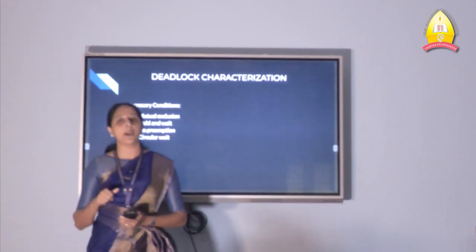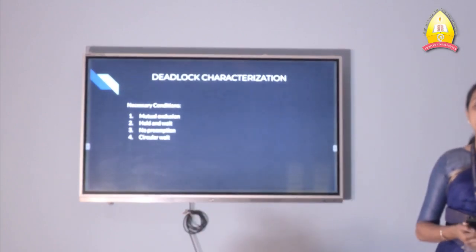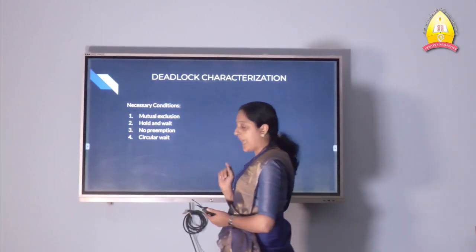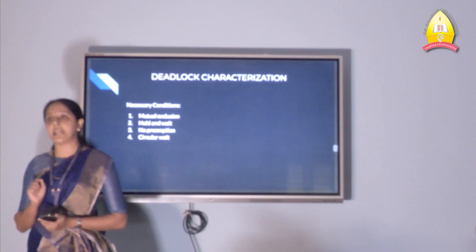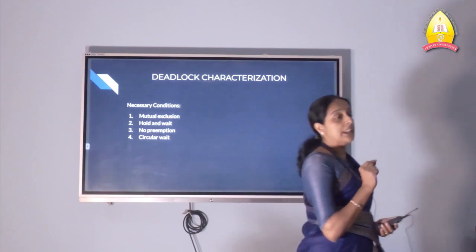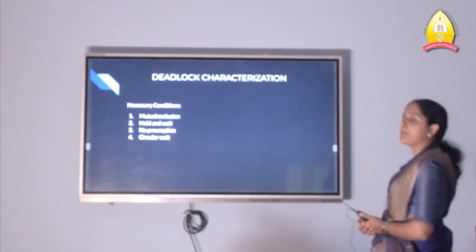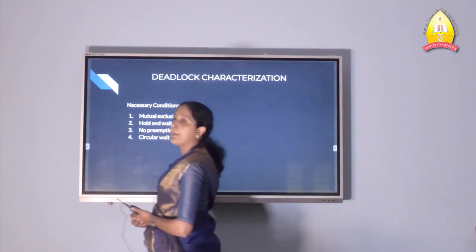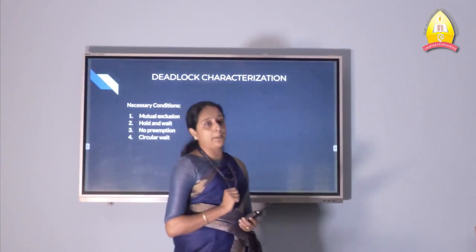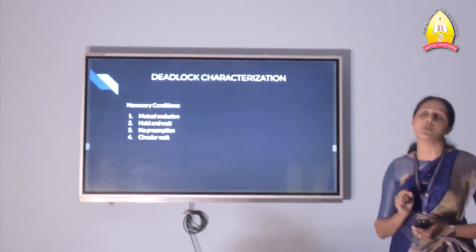Let's see each condition one by one. The first one is mutual exclusion. Mutual exclusion means at least one resource must be held in a non-shareable mode — that is, only one process at a time can use the resource. If another process requests that resource, the requesting process must wait. For example, if process P1 is using resource R1 at a particular instant of time, then process P2 cannot use that resource at that time. Resources can only be shared in a mutually exclusive manner.